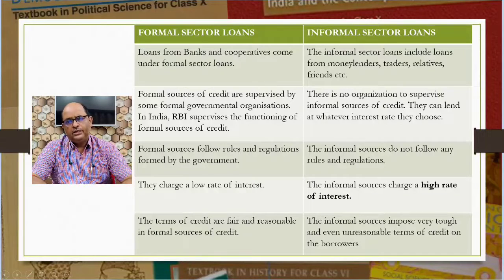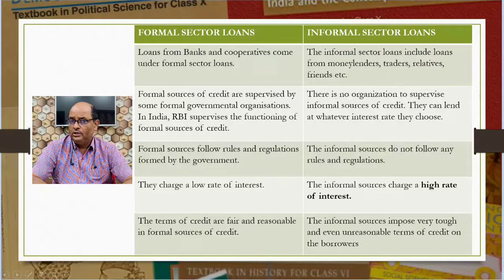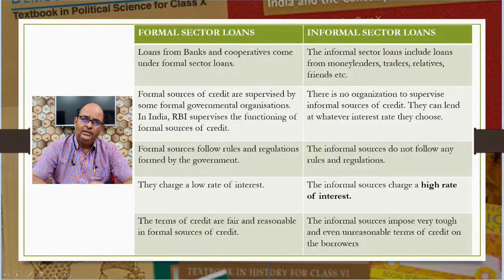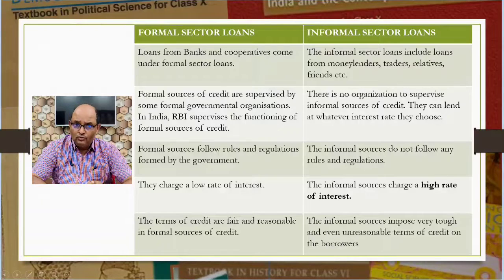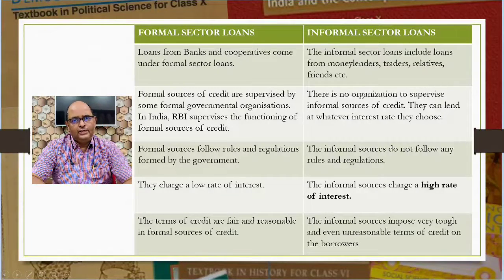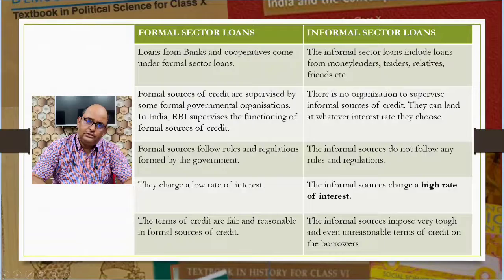Loans from banks and cooperatives come under formal sector loans, whereas informal sector loans include loans from money lenders, traders, relatives, friends, etc. Formal sources of credit are supervised by some formal government organizations. In India, the Reserve Bank of India supervises the functioning of formal sources of credit, whereas there is no organization to supervise informal sources — they can lend at whatever interest rate they choose. Formal sources follow rules and regulations formed by the government, whereas informal sources do not.